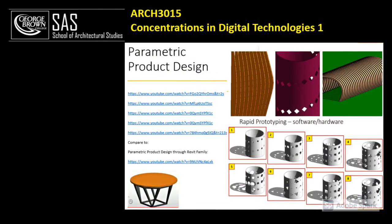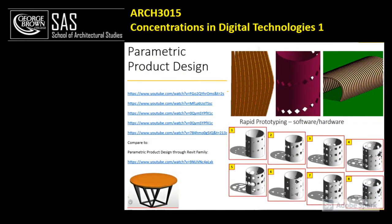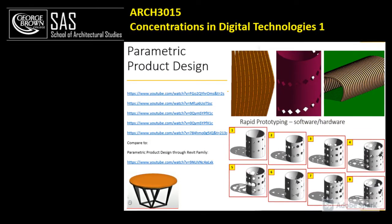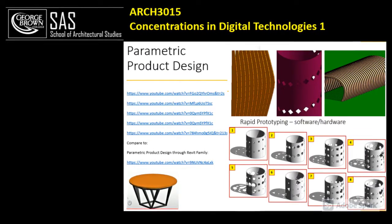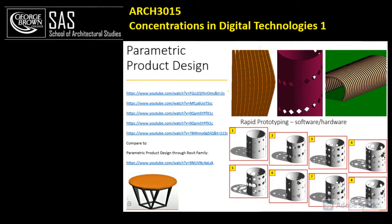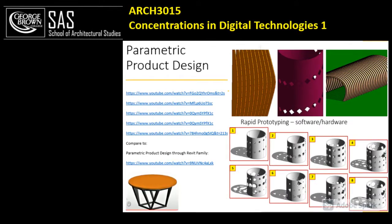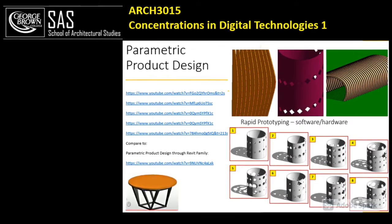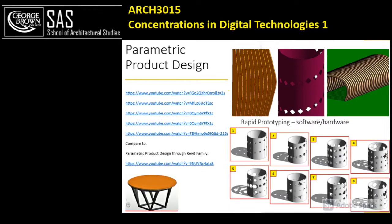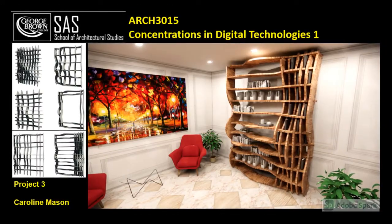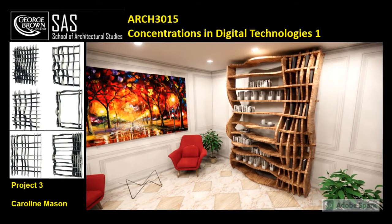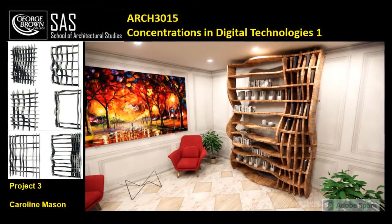In order to practice prototyping in the second half of the semester, we work on a parametric product design. The students are asked to design eight different prototypes using Dynamo in Revit, and they are also asked to provide a method for fabrication. You can see some samples of project 3 aligned with the prototypes.